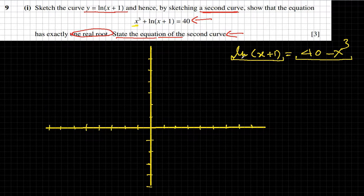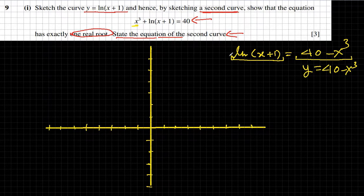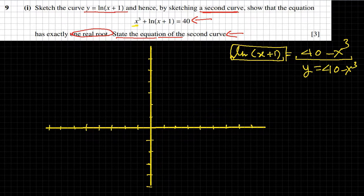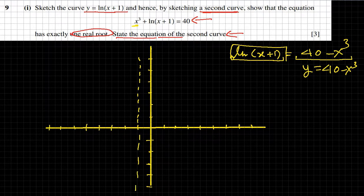We can draw the graph of both functions. The second curve is y = 40 - x³, and the first one they already gave us: y = ln(x+1). For ln(x+1), the parent function ln(x) has a known shape, but the plus 1 shifts the whole curve to the left by 1. So the asymptote moves from the y-axis to x = -1.